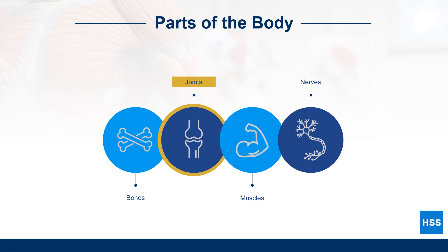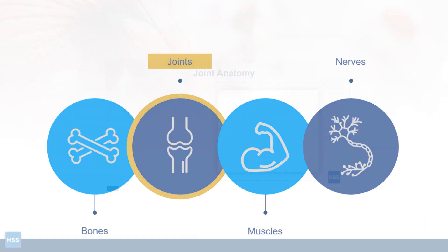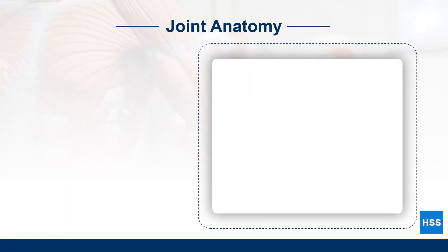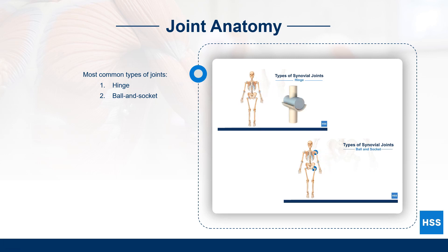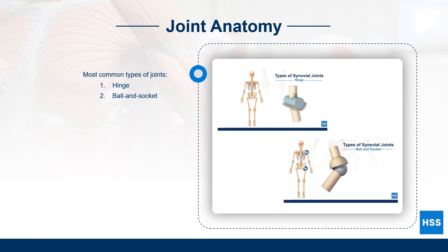First, let's review the anatomy of joints. Joints are where two or more bones meet. The two most common types of synovial joints are the hinge and the ball and socket. These types of joints allow for the greatest amount of movement. Within the joint there is cartilage and synovial fluid, which help the bones move smoothly.